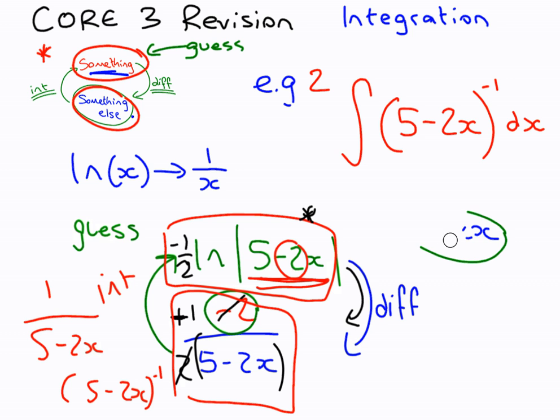I'm going to show you one with limits after this. It might be horrible because I might make it up, or it might be nice if I'm lucky. Minus 1 half, ln, modulus of 5 minus 2x, add c.